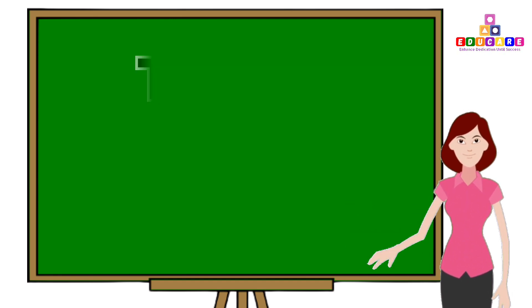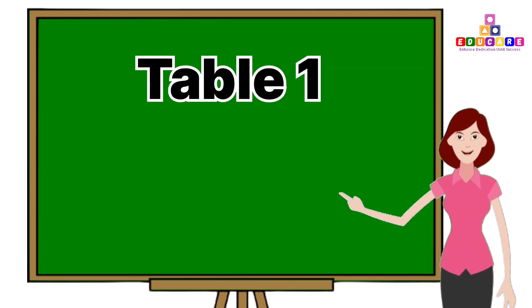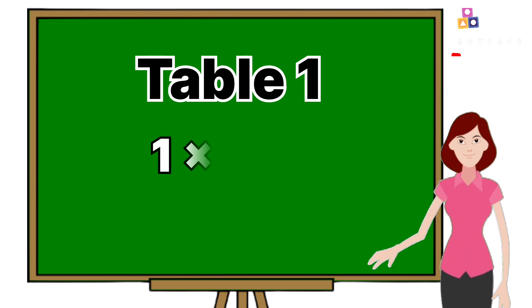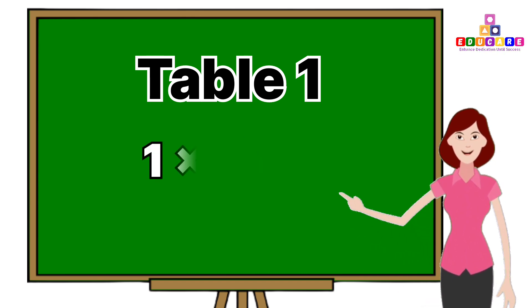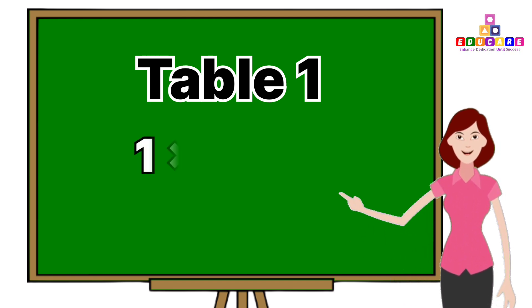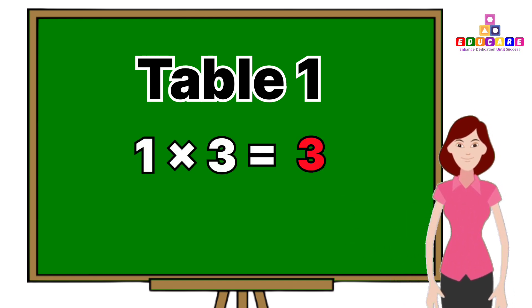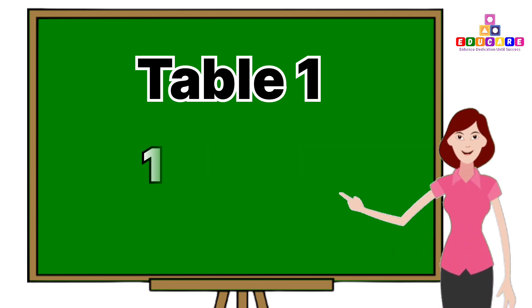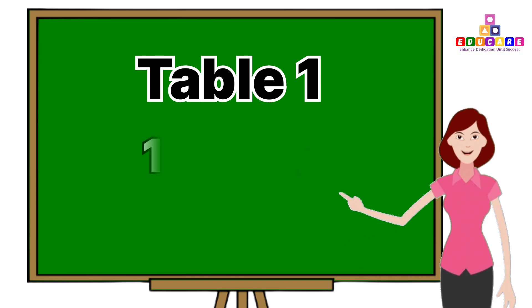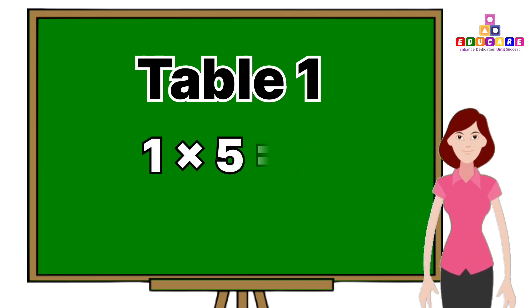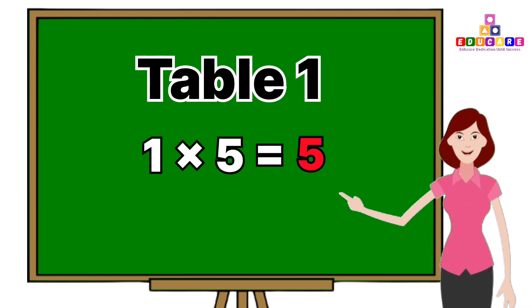Table 1. 1 one is 1, 1 two is 2, 1 three is 3, 1 four is 4, 1 five is 5.